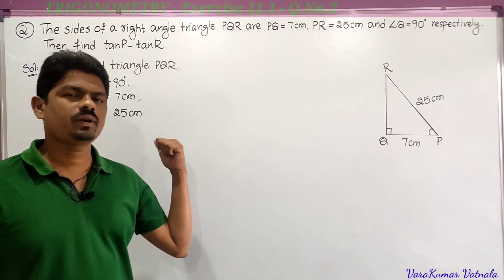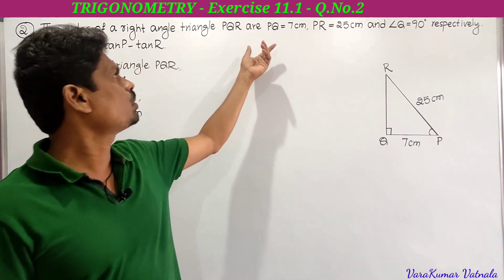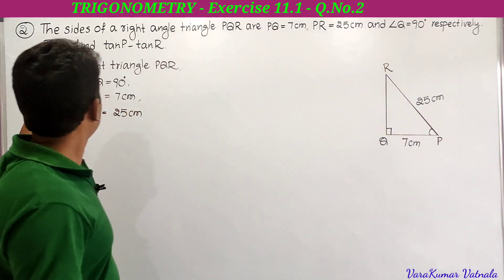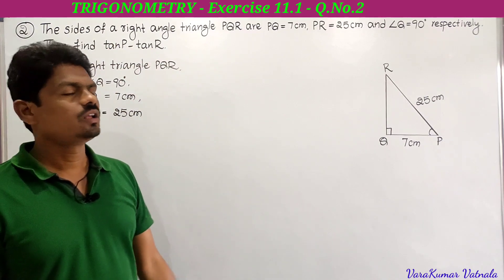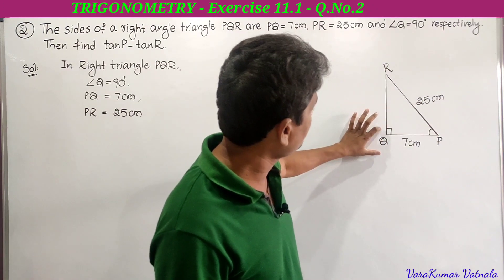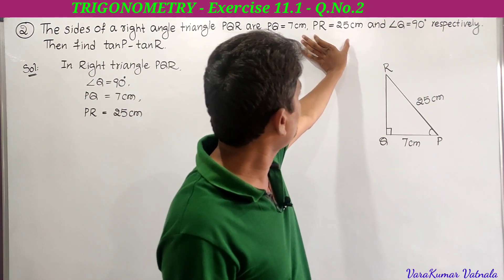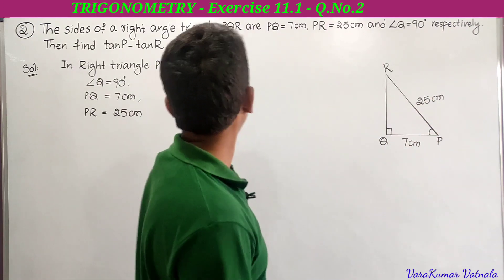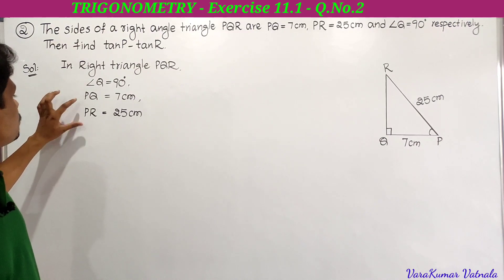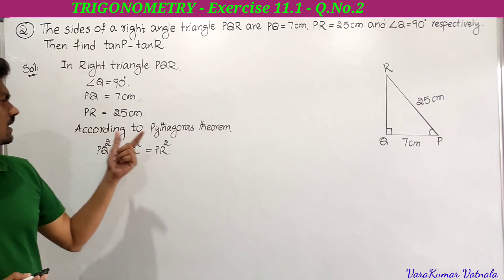Next, second problem in Exercise 11.1. The sides of a right angle triangle PQR: PQ equals 7 cm, PR equals 25 cm, and angle Q equals 90 degrees. Find tan P minus tan R. In right angle triangle PQR, angle Q equals 90 degrees, so the right angle is at Q. PQ equals 7, PR equals 25 cm.